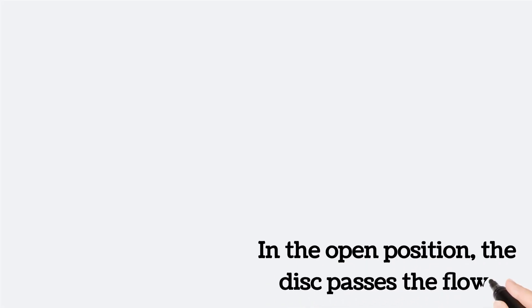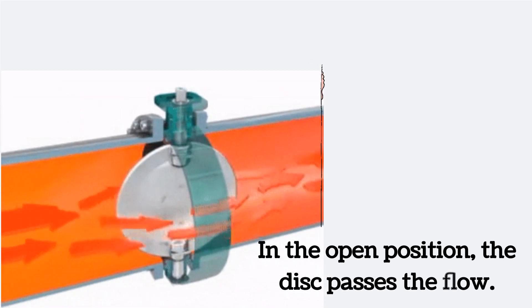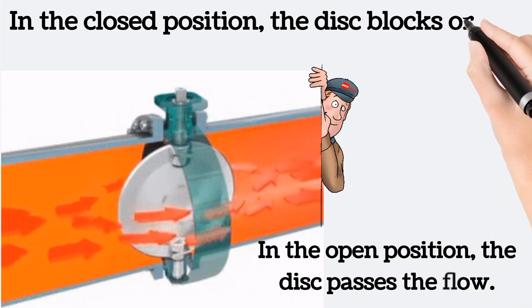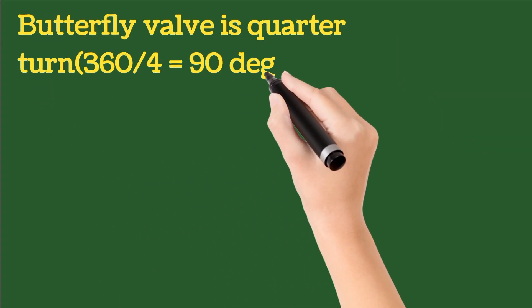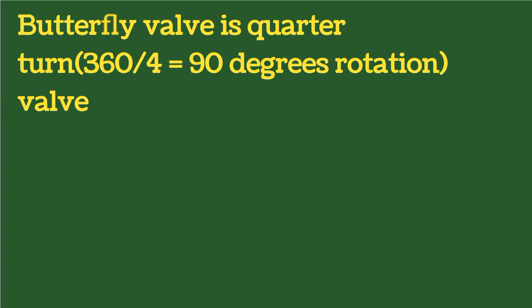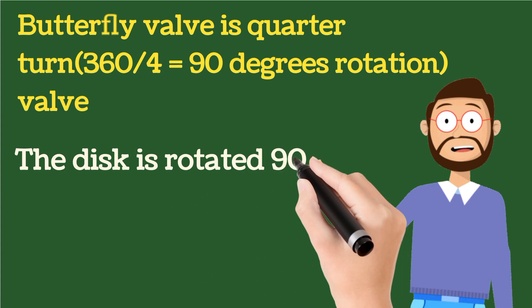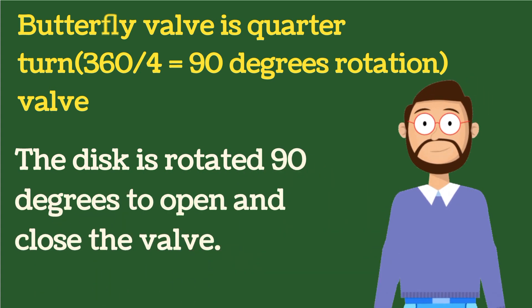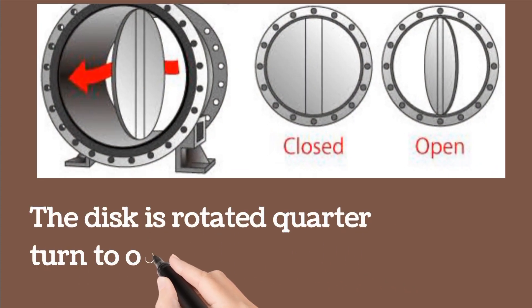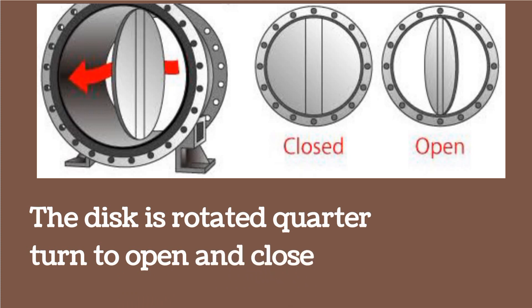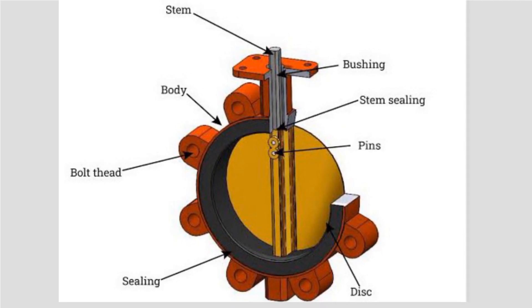When the valve is opened, the disc will pass the flow. When the valve is rotated and closed, the disc will stop the flow. The butterfly valve is also known as a quarter-turn valve — meaning a 90-degree rotational valve (360 degrees divided by 4). The disc is rotated 90 degrees to open and close the valve. In these images, butterfly valves are shown in open and closed position, with the disc clearly rotated 90 degrees or a quarter turn. Some parts of the butterfly valve are also shown.